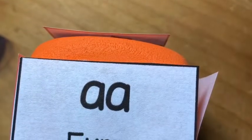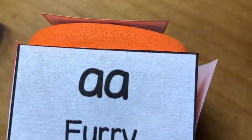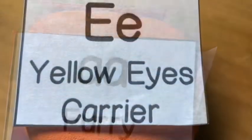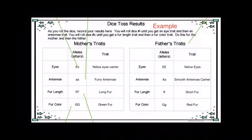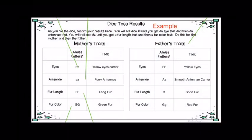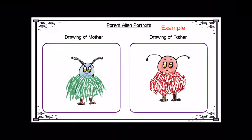Once they get those traits, they do it again for both the male and the female alien, fill out a chart — some are carriers and some are not — and then draw a portrait of the mother and the father based on the toss of the dice.